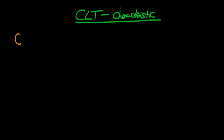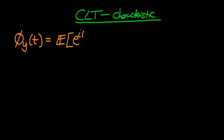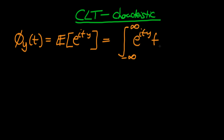Let's remind ourselves of what a characteristic function is. The characteristic function of some random variable y in terms of parameter t is defined as the expected value of e^(ity), which we can compute using the law of the unconscious statistician as the integral from minus infinity to plus infinity of e^(ity) times the probability distribution function, integrated over all space. Notably, characteristic functions exist for all types of random variables.